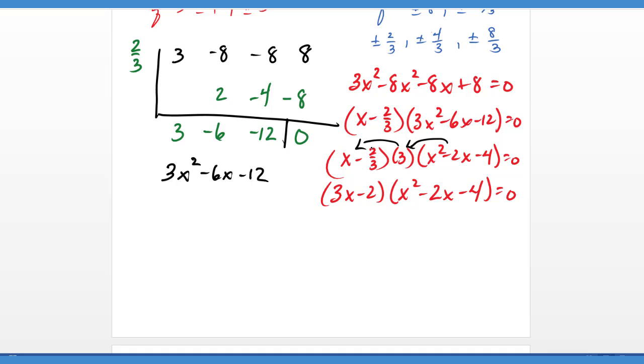Now, you should notice that that is unfactorable. And so we would have a linear part and a quadratic part that we need to solve. So the simple part is this: 3x minus 2 equals zero. We know that x equals two-thirds, and we had that with our synthetic division.